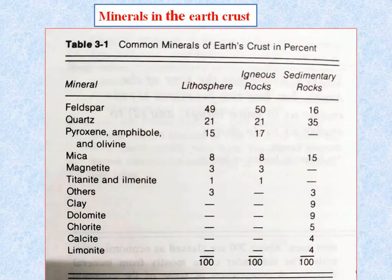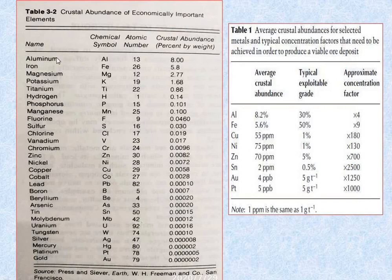The common minerals in the Earth's crust by percentage: feldspar composes 49% of the lithosphere, followed by quartz at 21%, pyroxene, amphibole, and olivine at 15%, and the rest including mica, magnetite, titanite, ilmenite, and others. Regarding crustal abundance of economically important elements: oxygen is the most abundant, followed by silicon, alumina 8%, iron 5.8%, magnesia 2.77%, potassium 1.68%, then titanium, hydrogen, phosphorus, manganese, fluorine, and gold in the last.